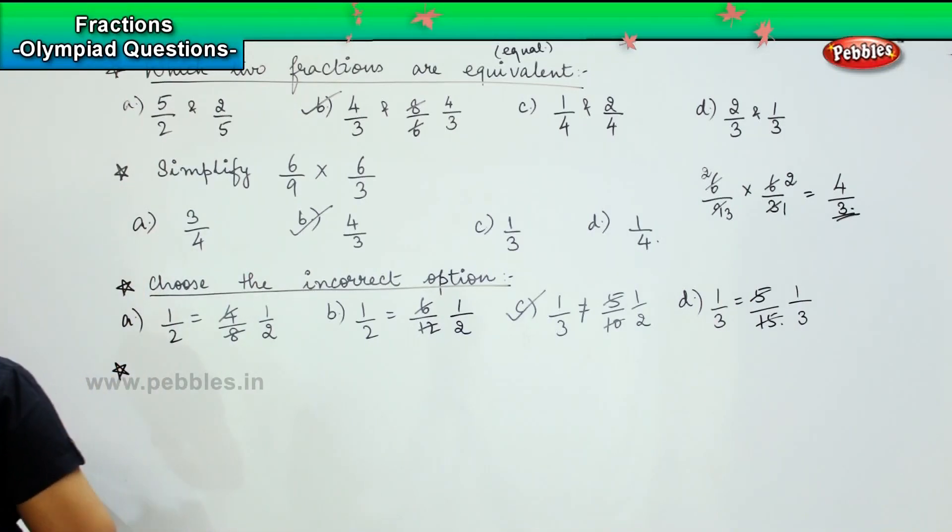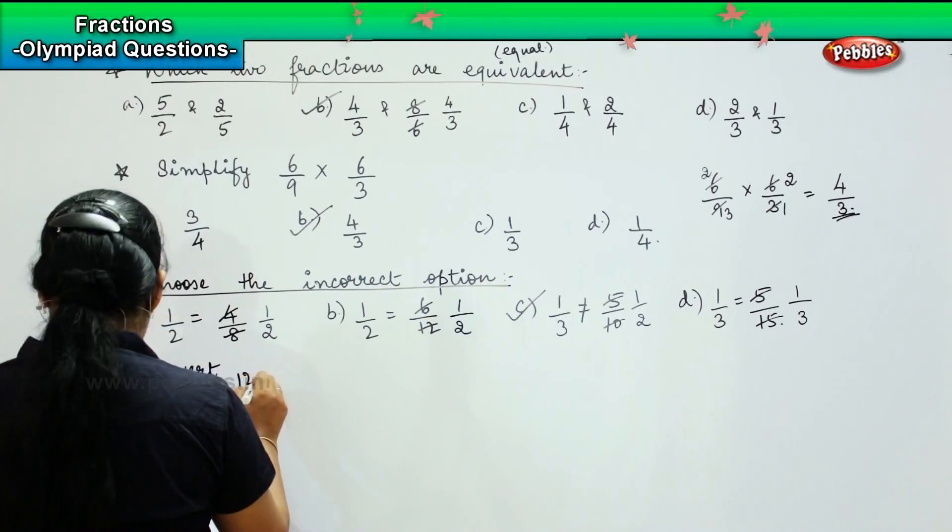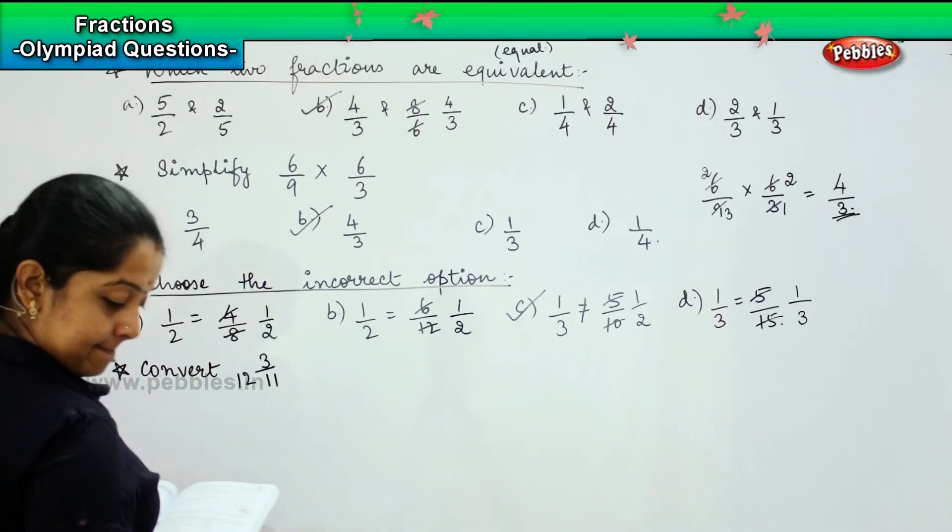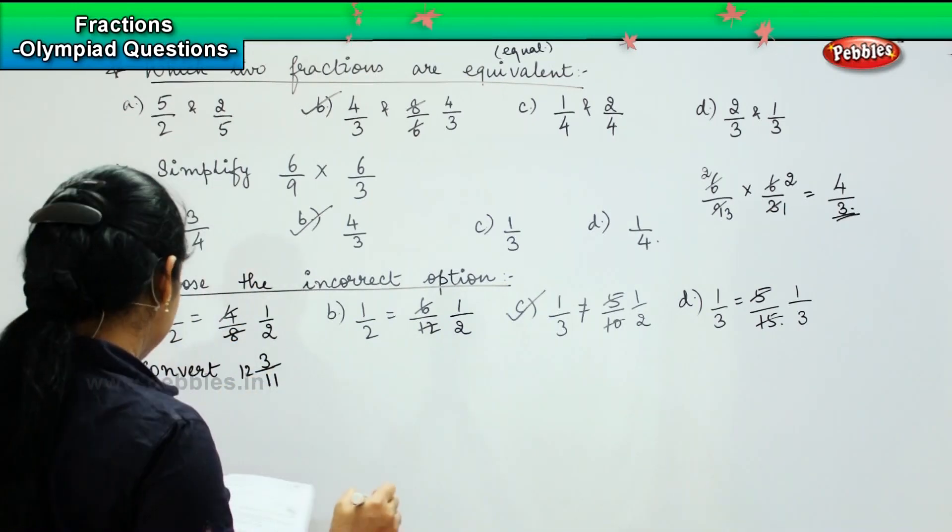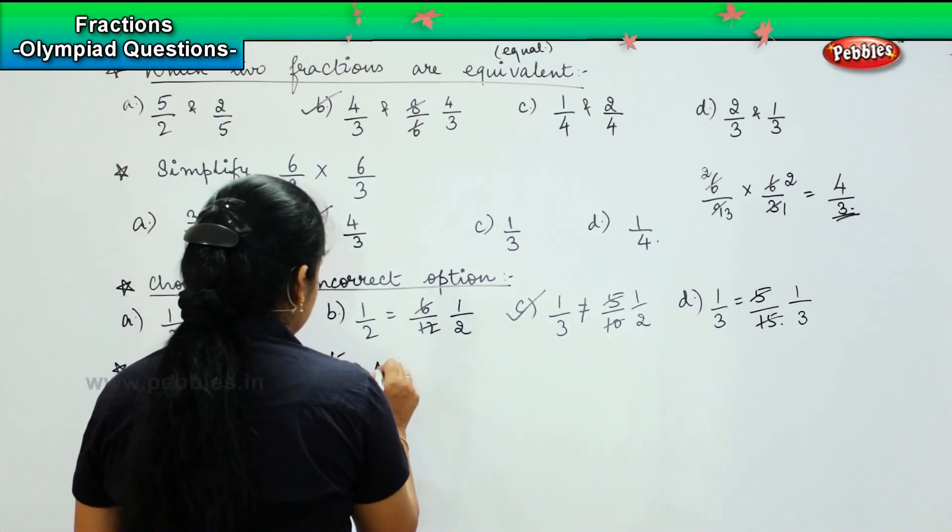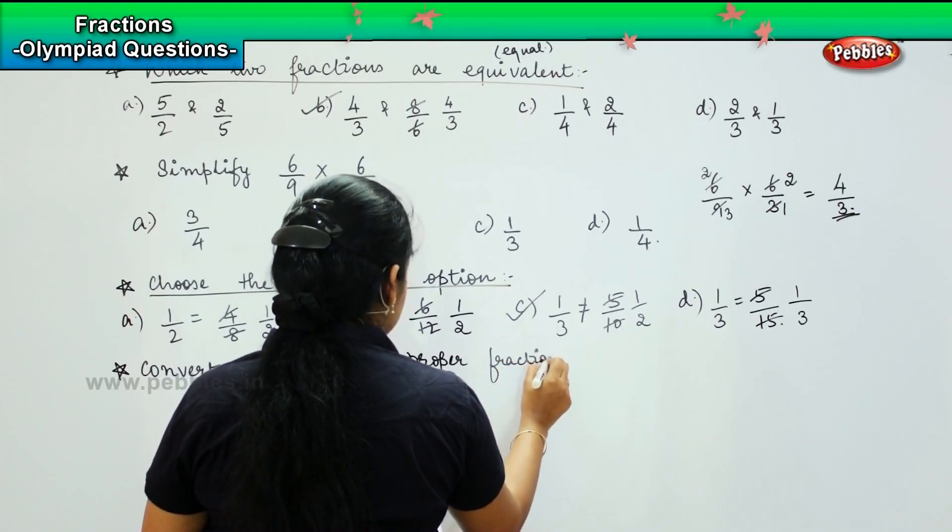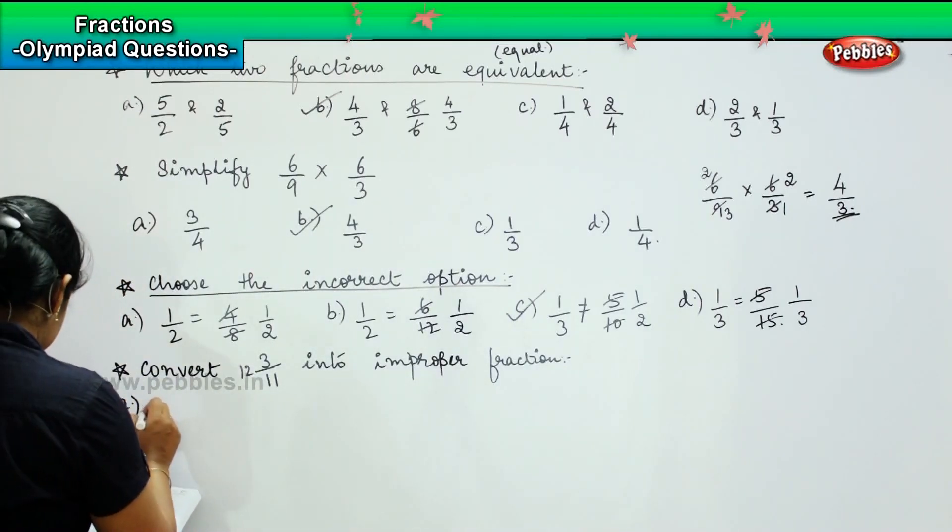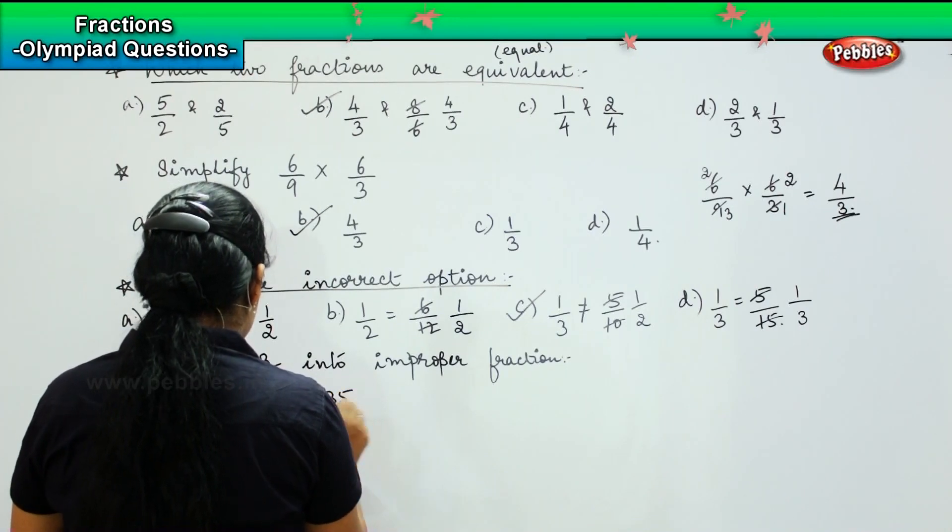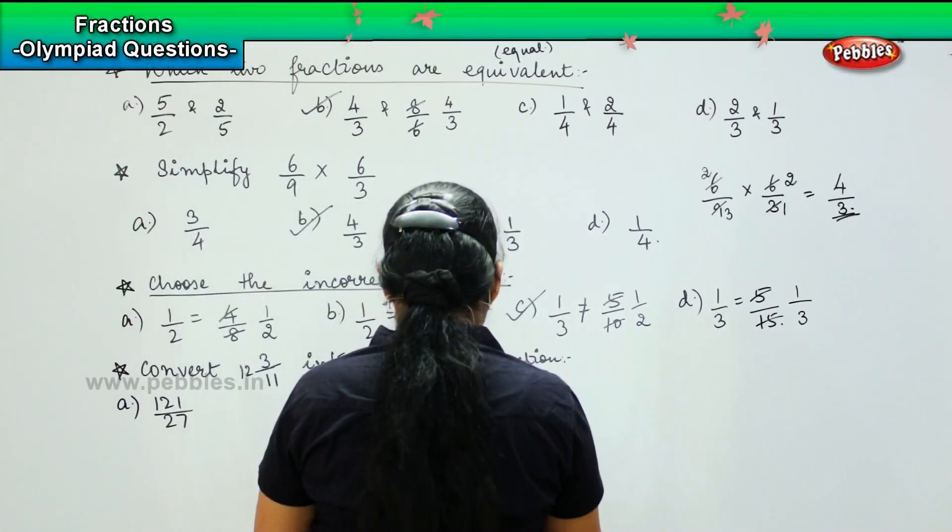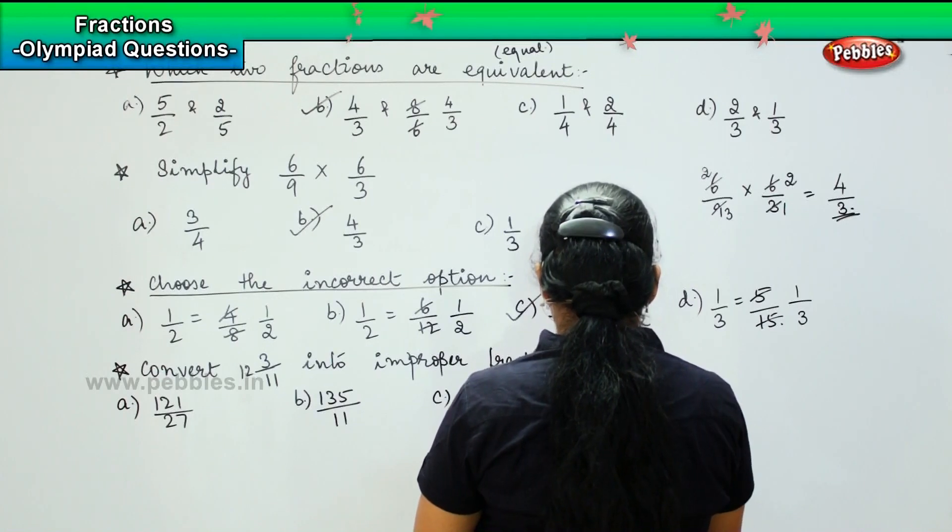Here is your next question. The question says: Convert 12 and 3/11 into improper fraction. Your options are: 121/27, option B: 135/11, option C: 141/11, and option D: 111/11.